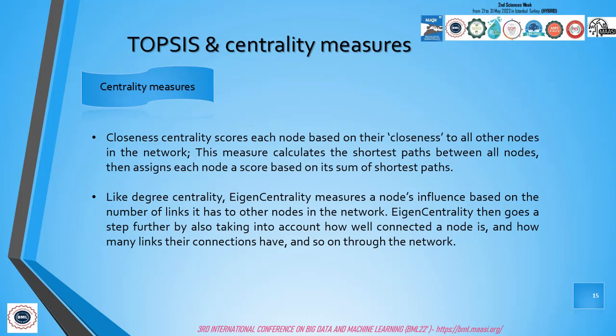For eigenvector centrality, like degree centrality, it measures nodes' influence based on the number of links it has to other nodes in the network. Eigenvector centrality then goes a step further by also taking into account how well connected the node is and how many links their connections have, and so on throughout the network. By calculating the extended connections of a node, eigenvector centrality can identify nodes with influence over the whole network, not just those directly connected to it.